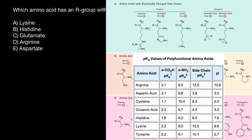In the carboxylic group, they may be negatively charged or neutral. In the amino group, they can get a positive charge or be neutral. So we have three columns: pKa-1 stands for the carboxylic end, pKa-2 stands for the amino end, and pKa-3 or pKaR stands for the R group side chain.